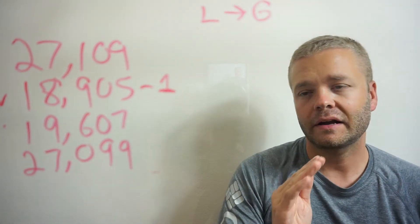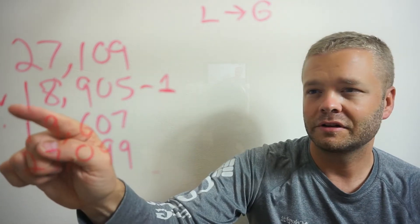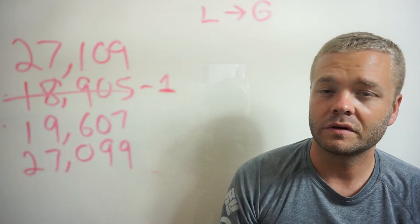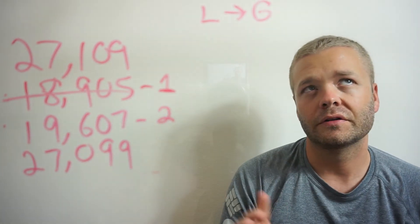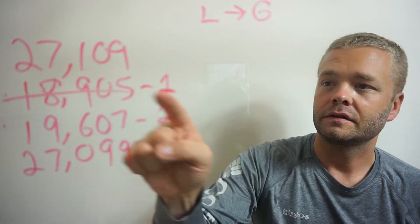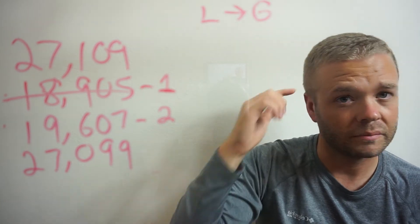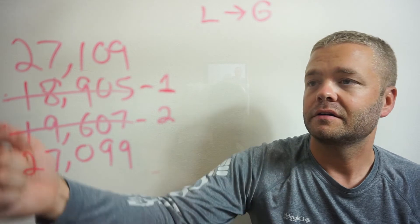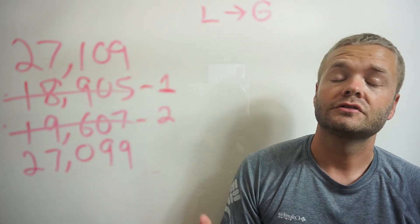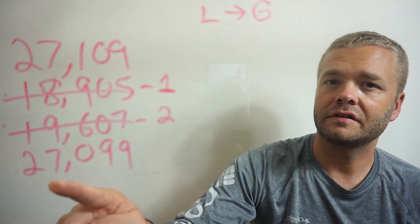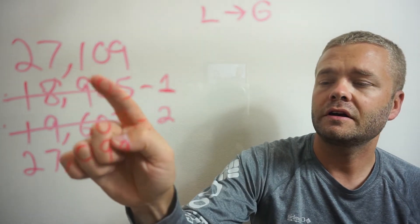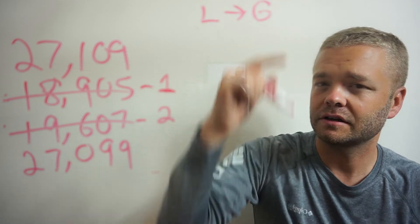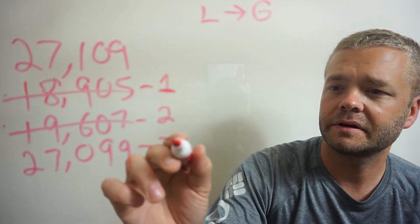Go back to the biggest place value. I don't care about that one anymore — I'll put a little X over it. There's a 2, a 1, and a 2. The 1 is smaller, so that's the next smallest number. Now for the remaining two: go back to the biggest place value — there's a 2 and a 2, the same. Go to the next — there's a 7 and a 7, the same. Go to the next — there's a 1 and a 0. Zero is smaller than 1, so that number is the next biggest, and lastly we have our biggest number.